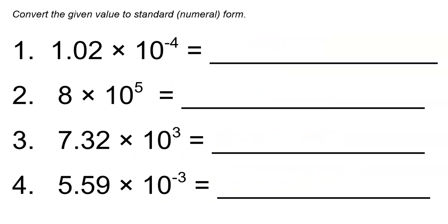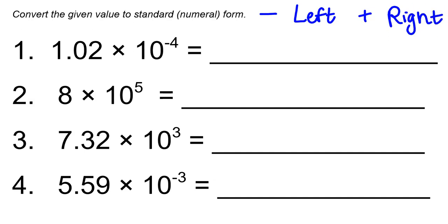Now we're going to go the other direction — instead of converting numbers into scientific notation, we'll take values in scientific notation and convert them back to standard form, also sometimes called numeral form. This is the normal version of a number you're used to seeing. Most people find this easier. We just have to pay attention to which direction we're moving the decimal point: a negative exponent means we move left, and a positive exponent means we move right.